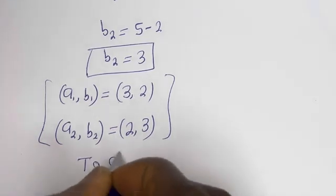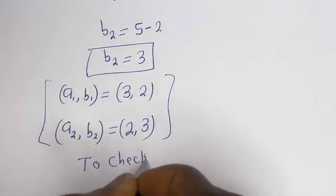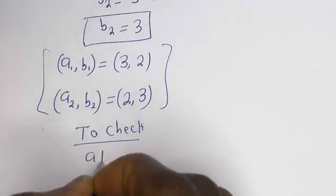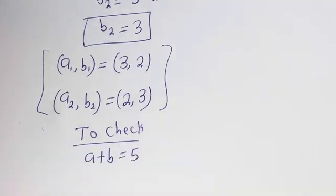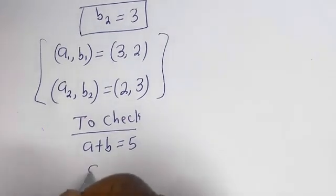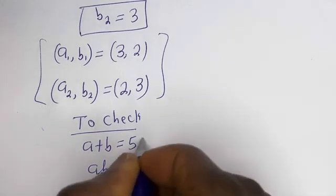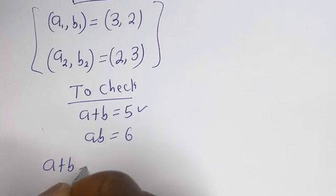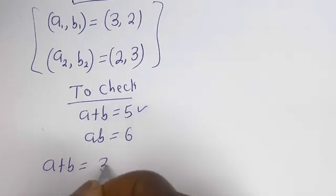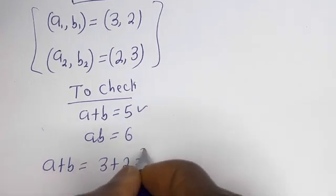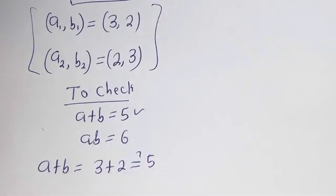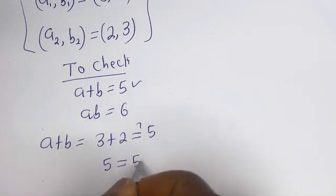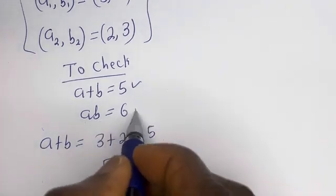To check, we use the given equations: a plus b is equal to 5, and a times b is equal to 6. Considering (3, 2): a plus b equals 3 plus 2, which must equal 5. And indeed 3 plus 2 is 5, equal to 5 — which is true.